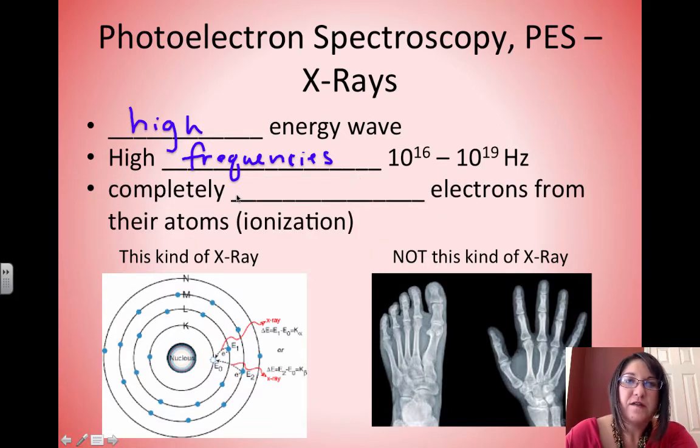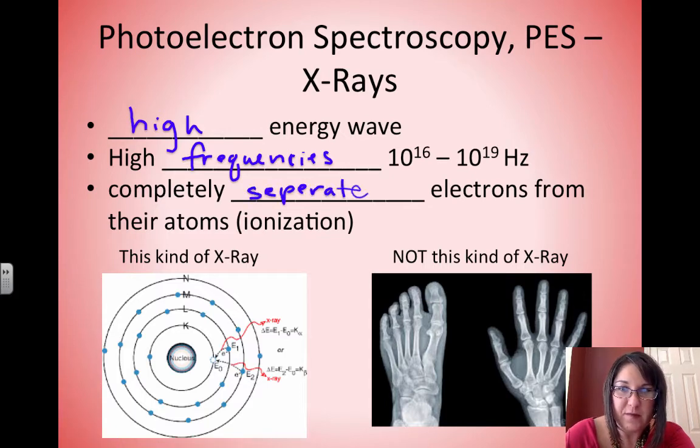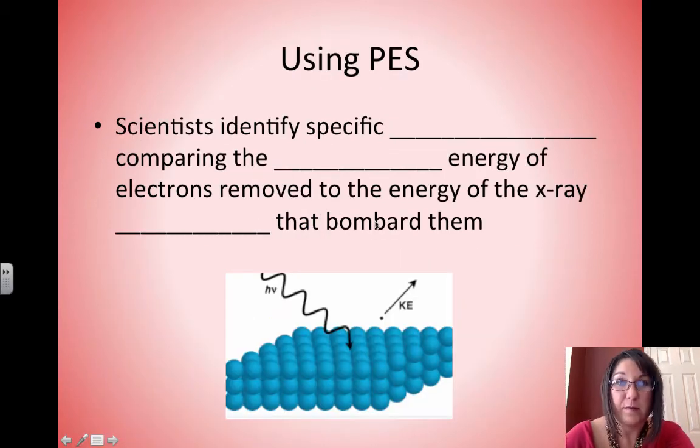These energy waves are so intense that they can completely separate electrons from their atoms. We're talking ionization, taking those electrons away completely.